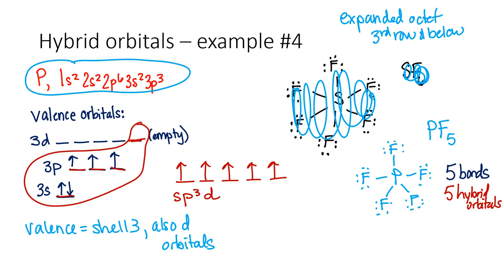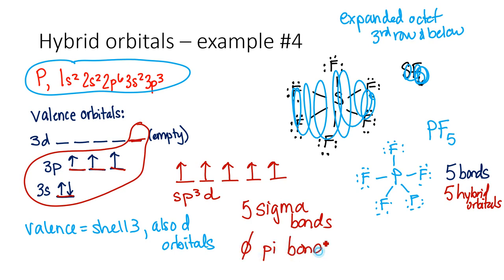These bonds are all sigma bonds — five sigma bonds with no pi bonds in this example. Pi bonding only happens when you have a double or triple bond. Also notice there are no unhybridized p orbitals around, and pi bonds happen with the unhybridized p orbitals. So this is an overview of hybridization and sigma and pi bonding.